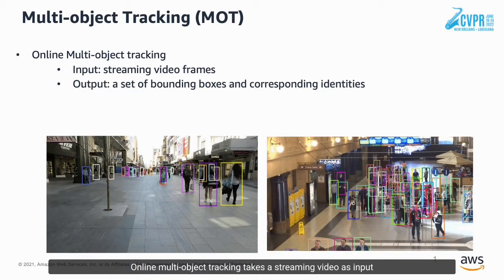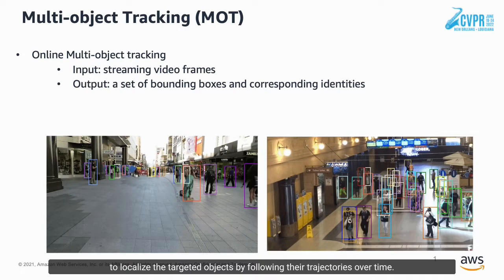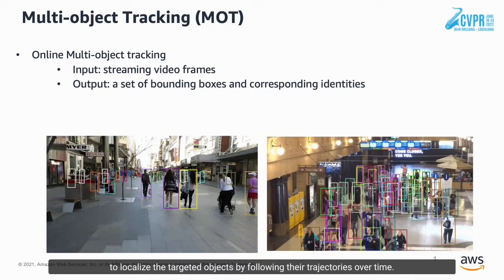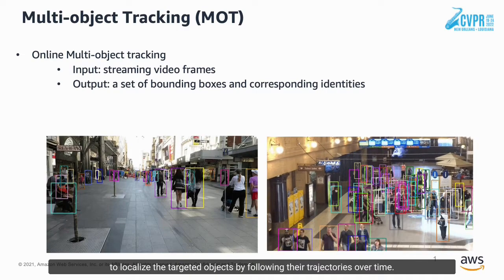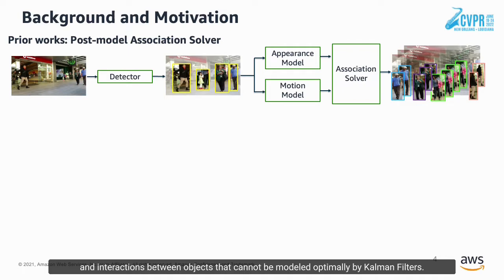Online Multi-Object Tracking takes a streaming video as input to localize the targeted objects by following their trajectories over time. Most previous studies in MOT rely on common filters to model motion. While effective, there are still common nonlinear non-Gaussian movements and interactions between objects that cannot be modeled optimally by common filters.